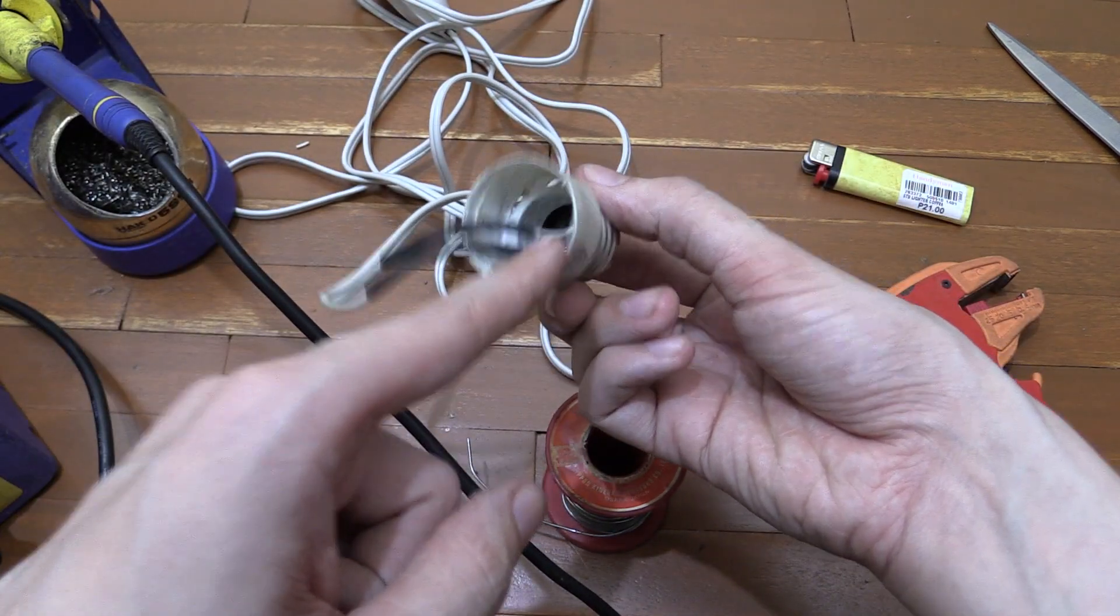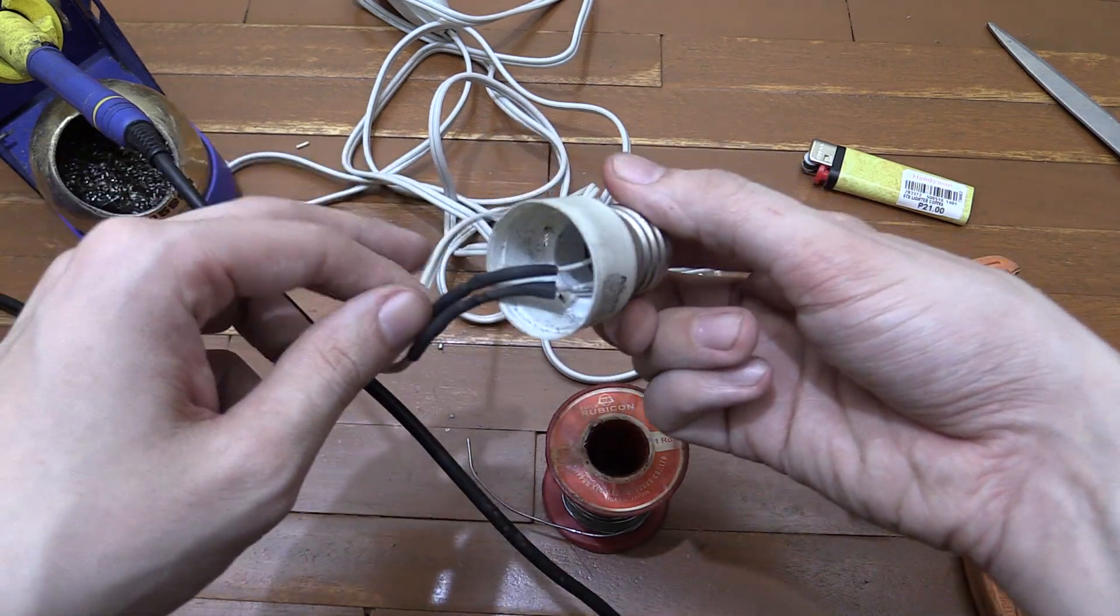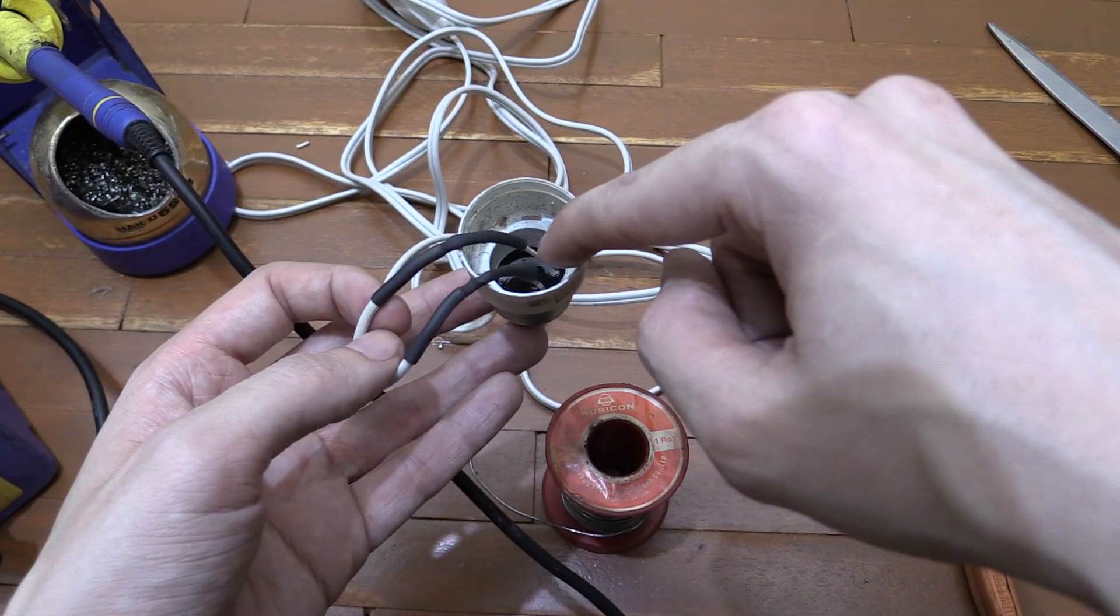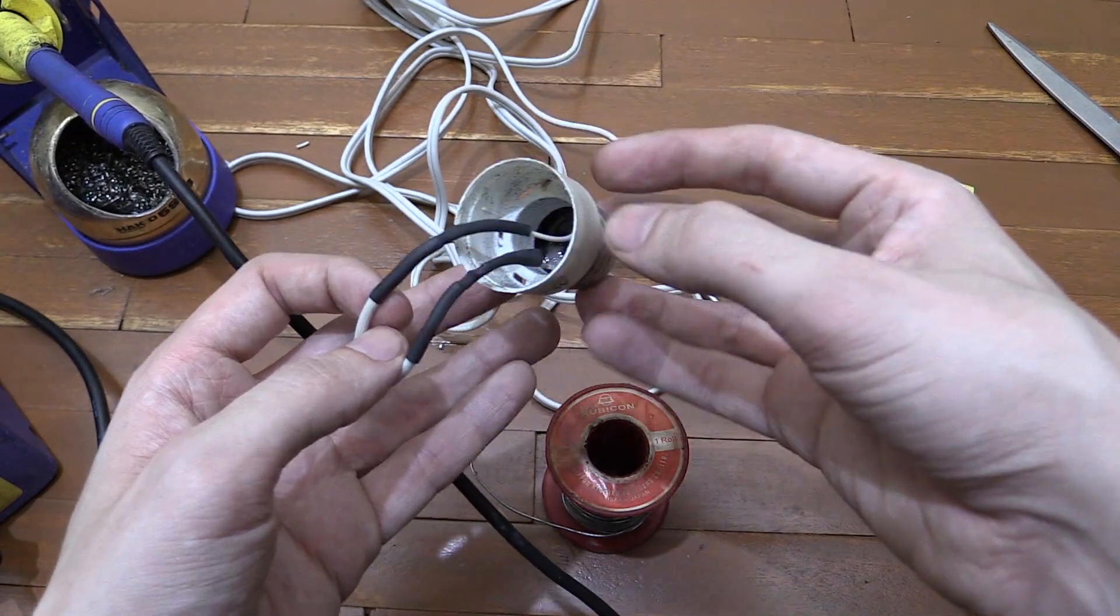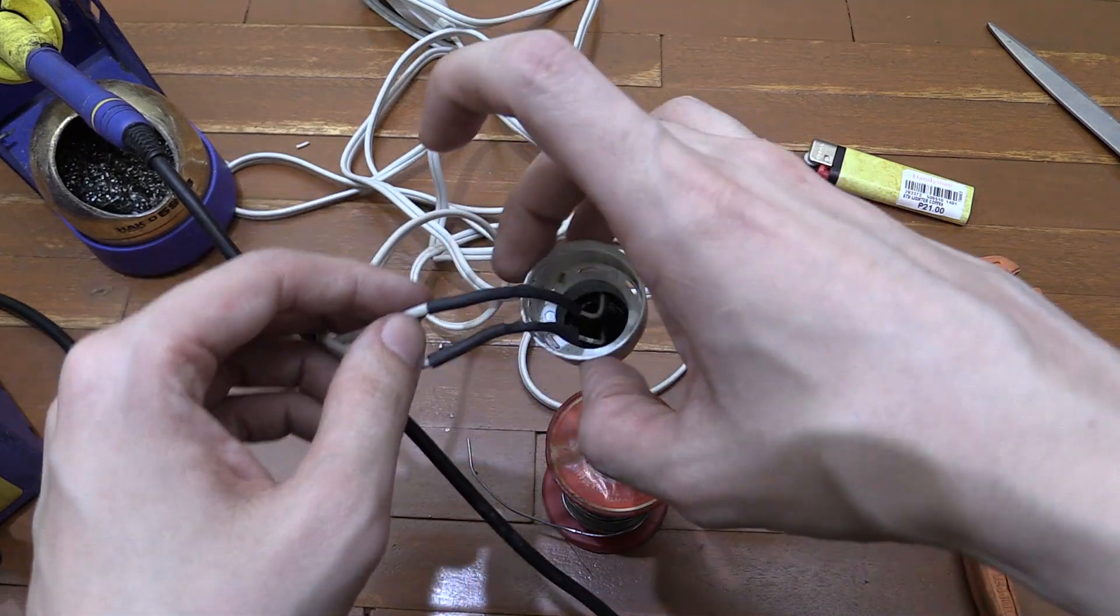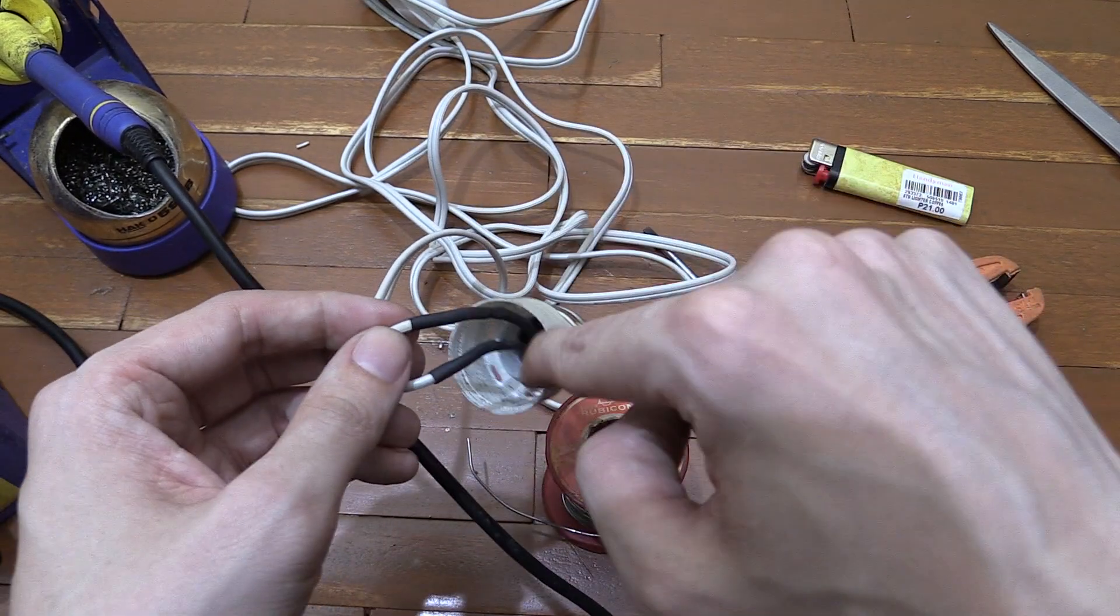Now one thing to bear in mind is these wires may not be that securely connected to this. So if I was actually making this for an emergency situation, I'd probably fill that in with hot glue or resin or some kind of filler that can make sure those wires are completely secure. Because otherwise I'm sure once you screw this in once or twice, those wires will probably come loose.